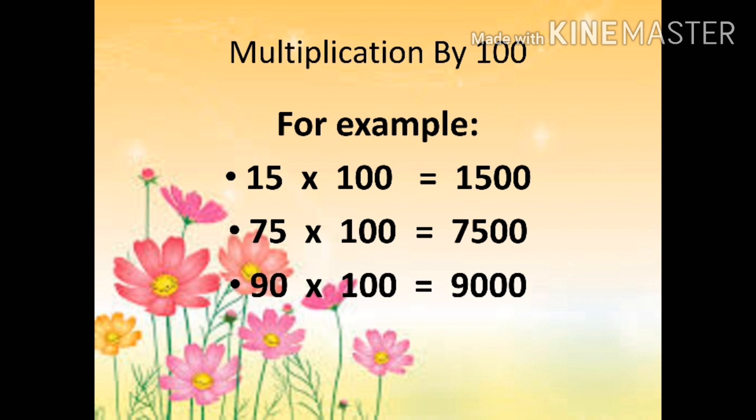15 multiplied by 100: we will keep 15 as it is and put two zeros, and it becomes 1500. 75 multiplied by 100: we will keep 75 as it is and put two zeros, and it becomes 7500. And 90 multiplied by 100 equals 9000.